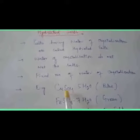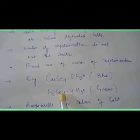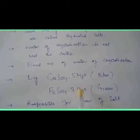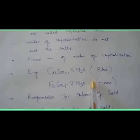Each salt has a fixed number of water of crystallization. For example, copper sulfate pentahydrate has five water of crystallization molecules, and due to these the salt is blue in color. Similarly, ferrous sulfate heptahydrate has seven water molecules present as water of crystallization, and the color of this salt is green.